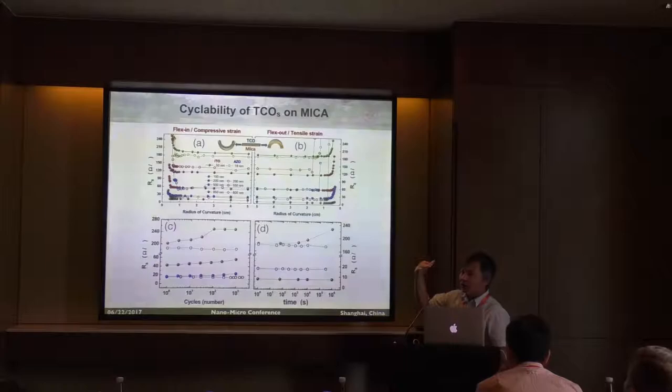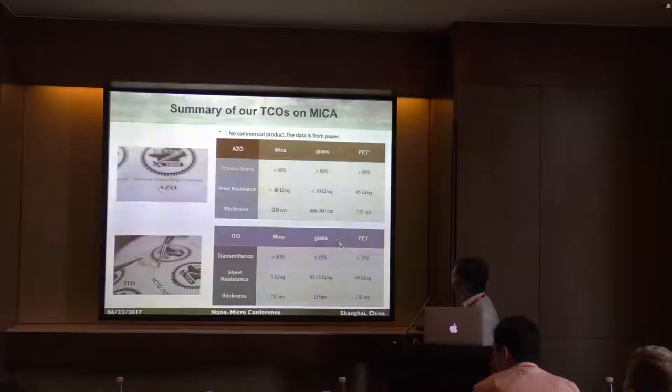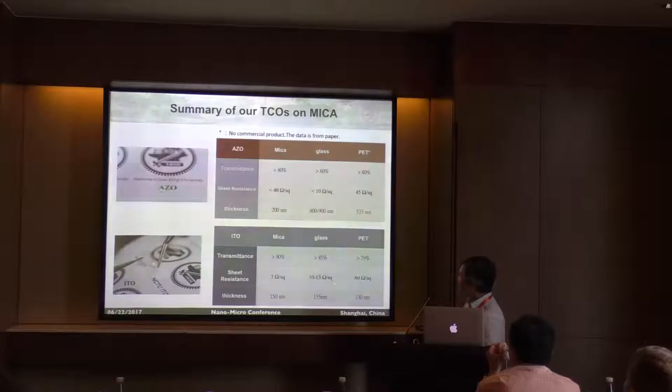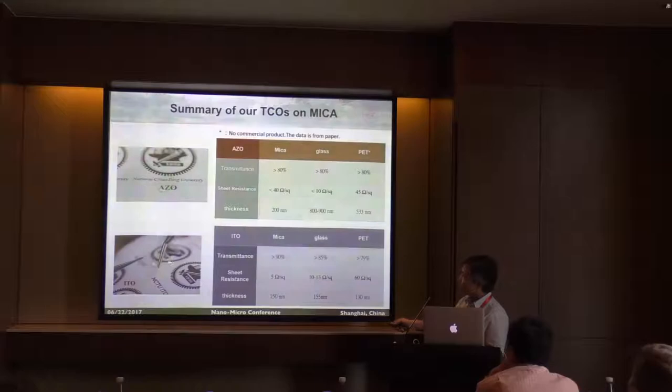We do have a substrate which is transparent, and an electrode — everything is transparent and flexible. Comparing our data with substrates you can buy from companies, for example ITO on glass or PET, we can get transmission higher than 90%. The sheet resistance is even smaller compared to ITO deposited on glass or PET. We also have a comparison for ITO on muscovite — everything is transparent and also flexible.